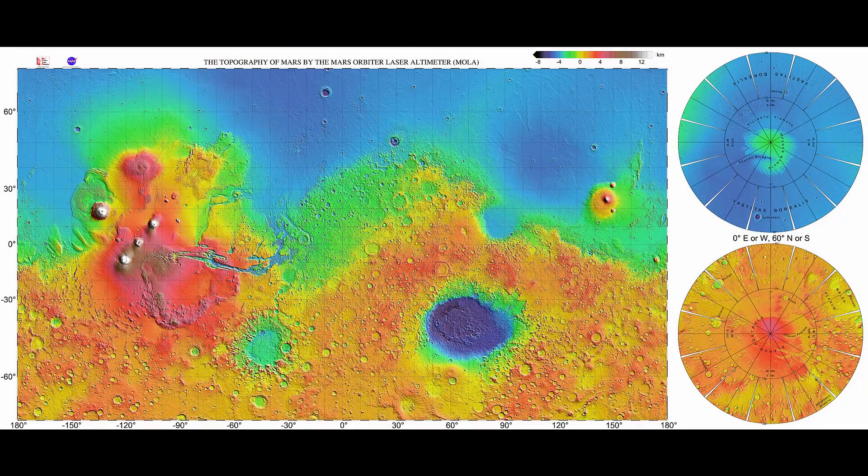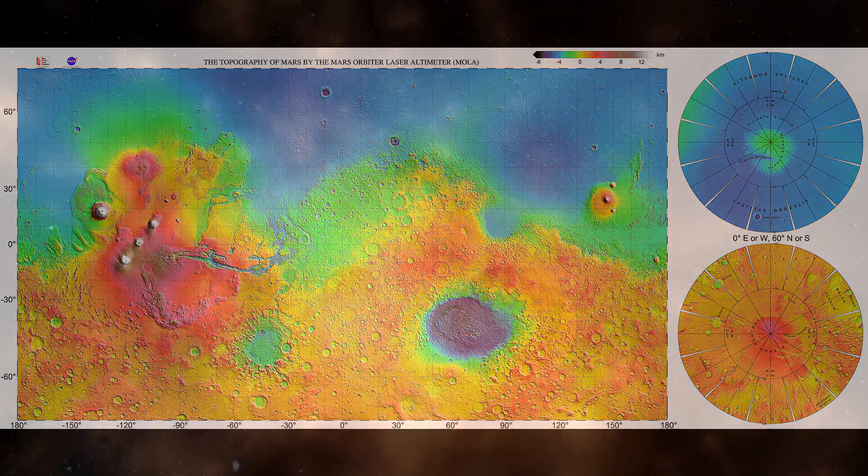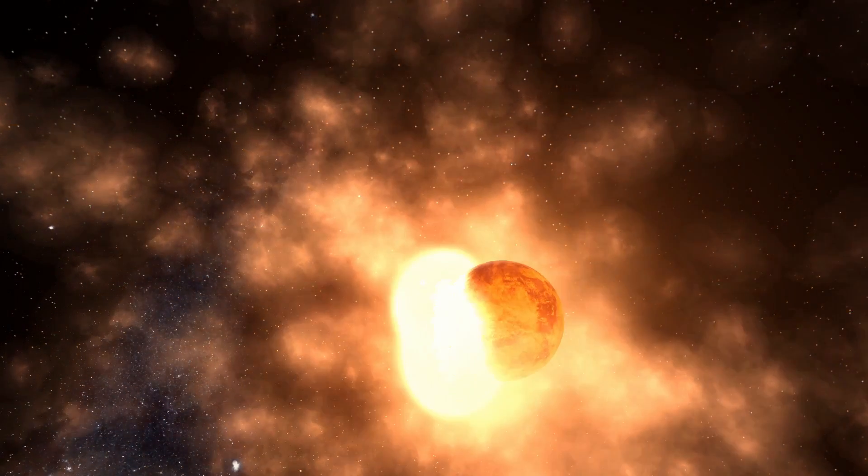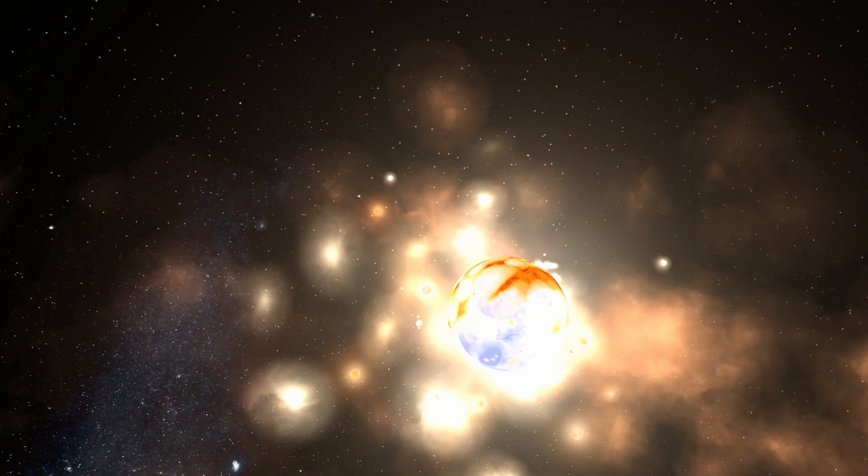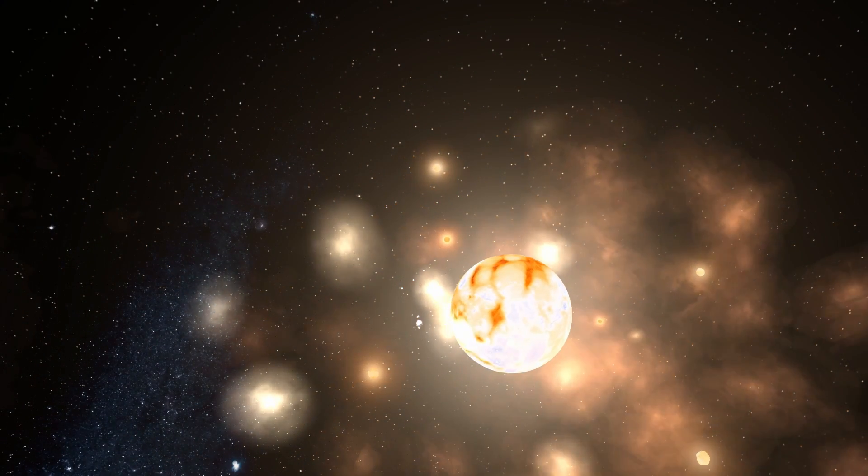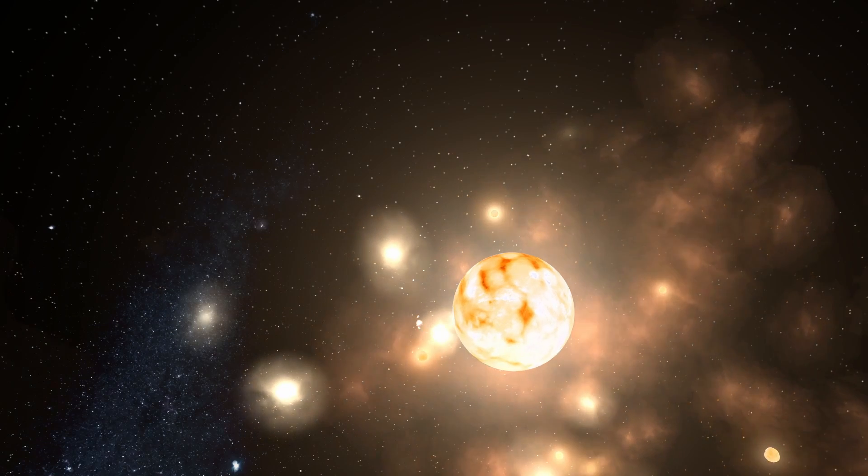Mars had its northern hemisphere flattened, possibly from a Pluto-sized object. Earth had its moon formation impact, and a Mars-sized planet called Theia grazed Earth, crossed the Roche limit and broke up, forming a ring around Earth, which led to the accretion of the moon.